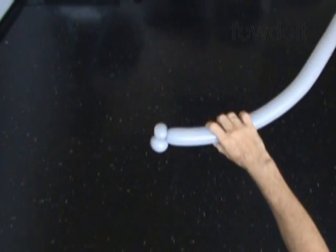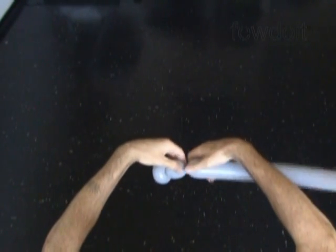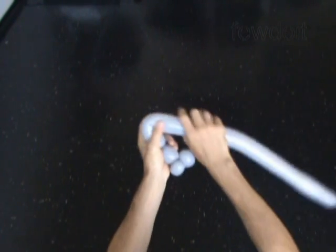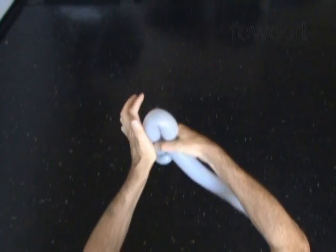Then we twist the fourth about 2 inch long bubble. Twist the fifth about 5 inch long bubble. And then we lock both ends of the fifth bubble in one lock twist.